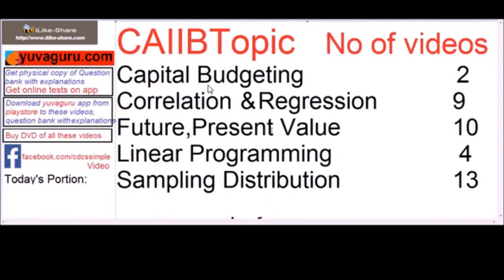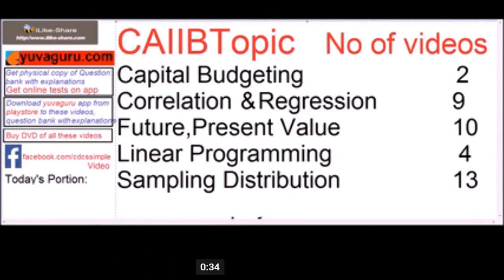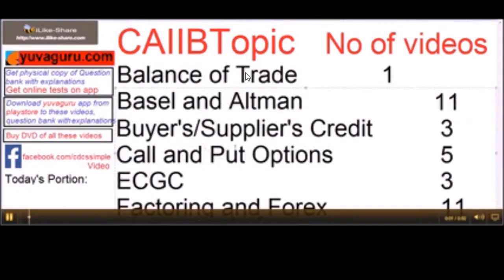For CAIIB: capital budget and correlation, future and present values, linear programming, sampling distribution, balance of trade, ultimate score, buyer's credit, supplier's credit, call and put options balance, ECGC, factoring.